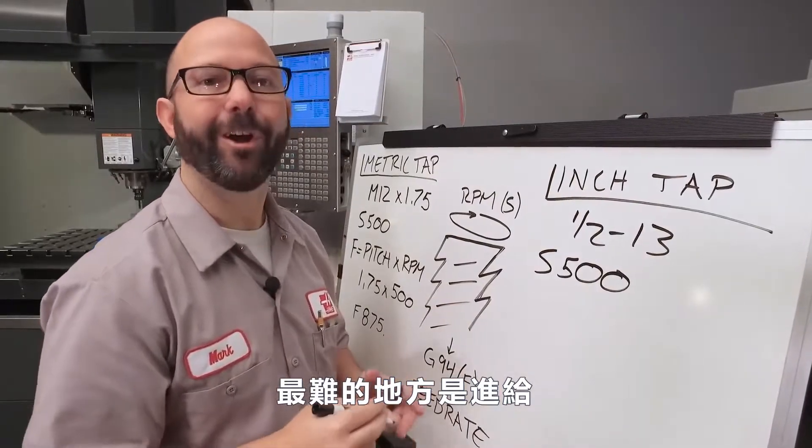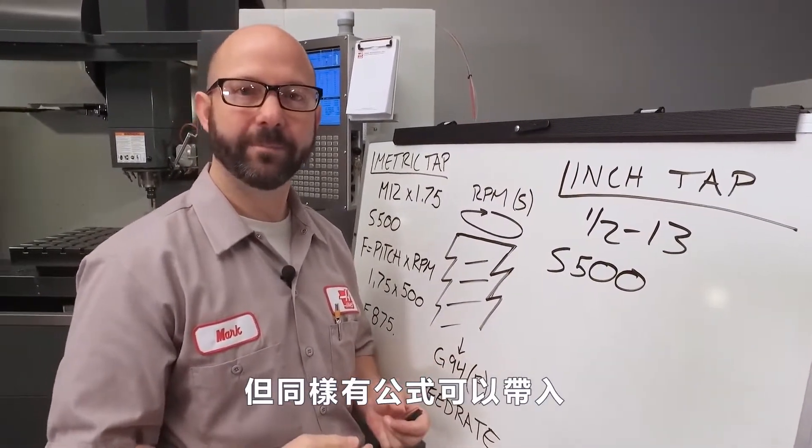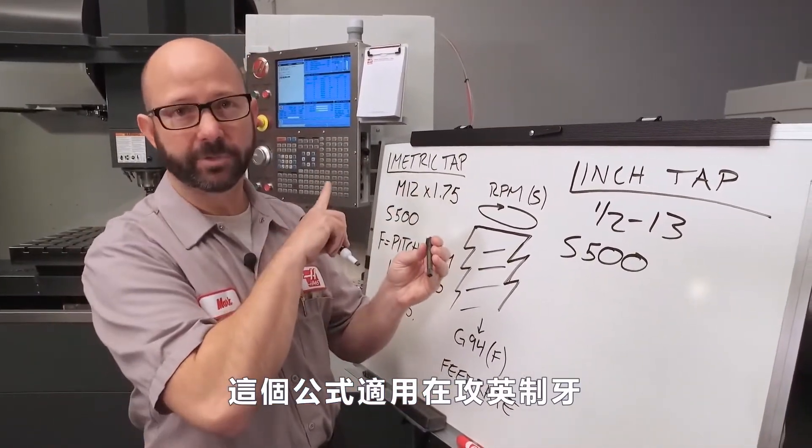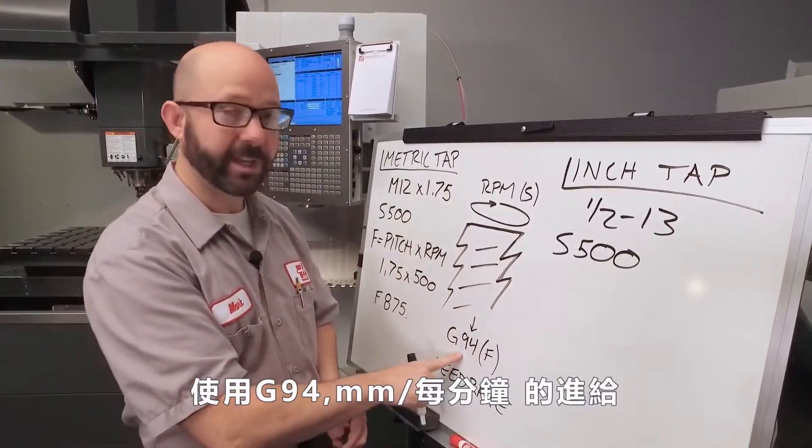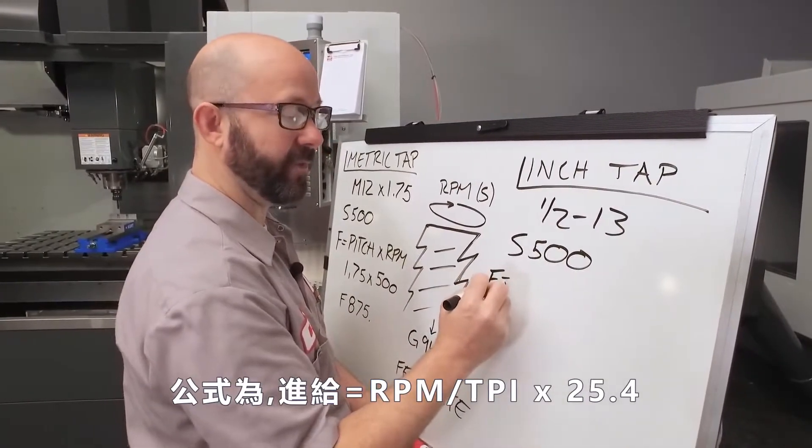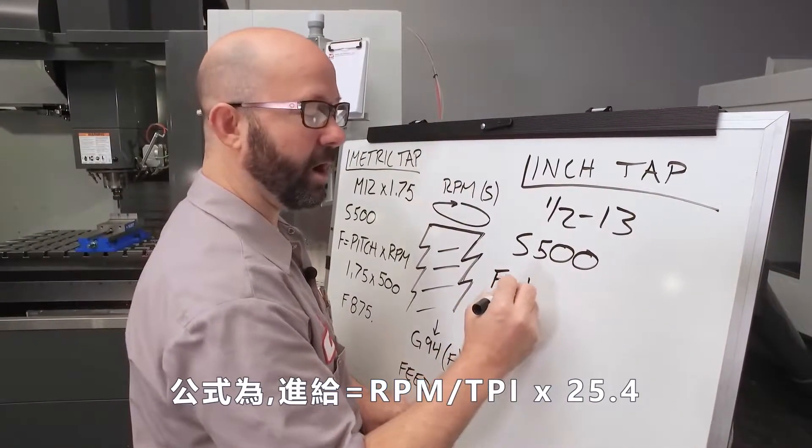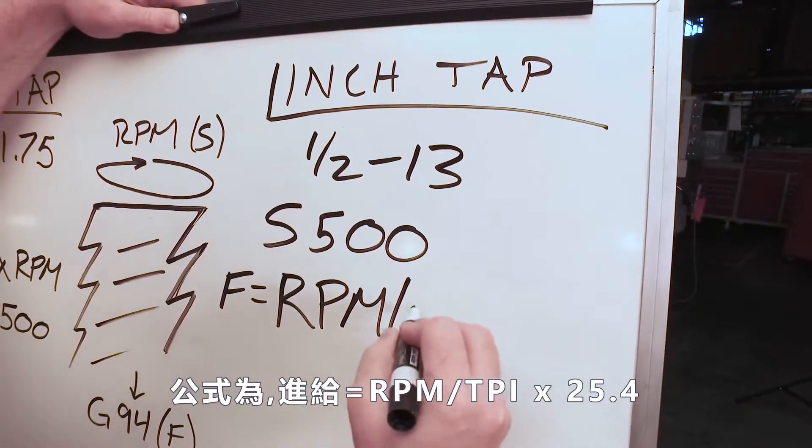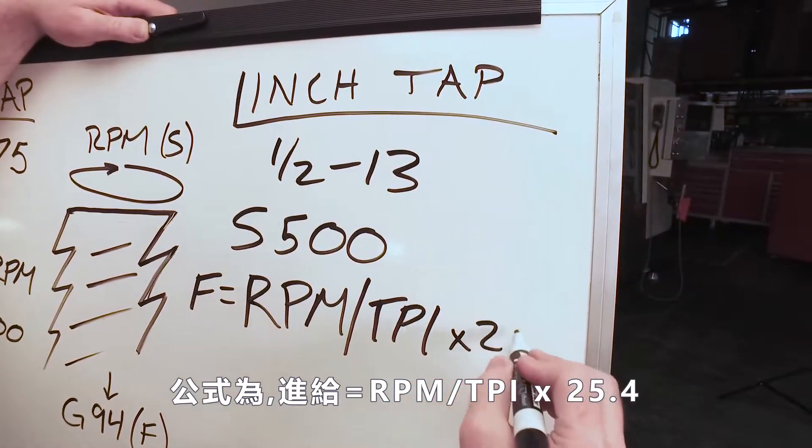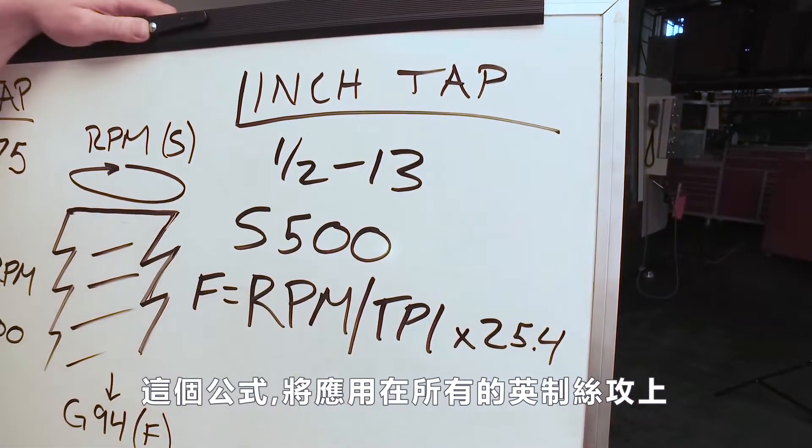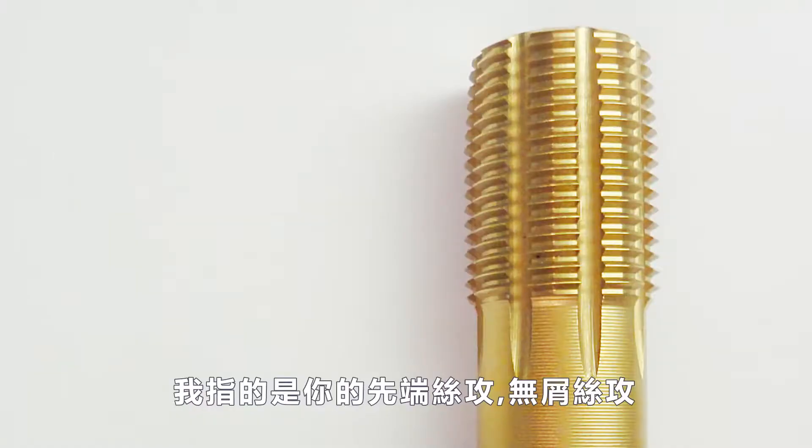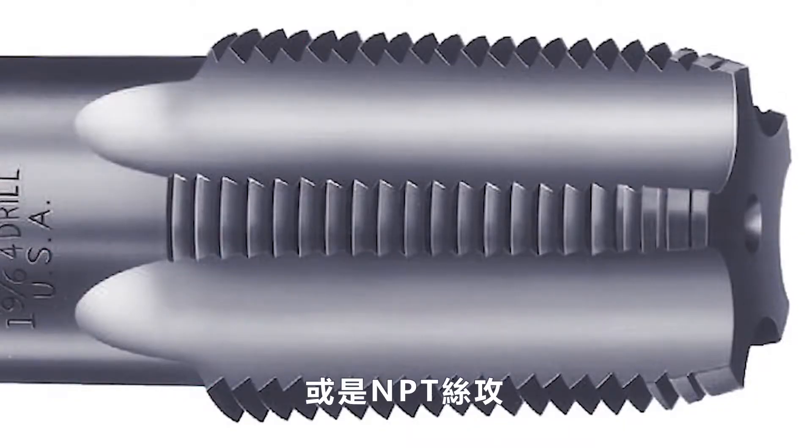Now we come to our feed rate, the hard part again, but again, we've got a formula. This formula is going to work for an inch tap while our machine is in metric mode using a G94 millimeter per minute feed rate. Our formula is feed equals RPM divided by TPI times 25.4. Now this formula is going to work for all of your single start inch taps. We're talking about your cutting taps, your form taps, and even those NPT tapered pipe taps.